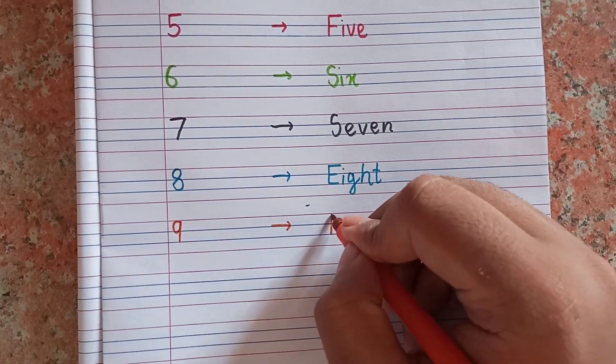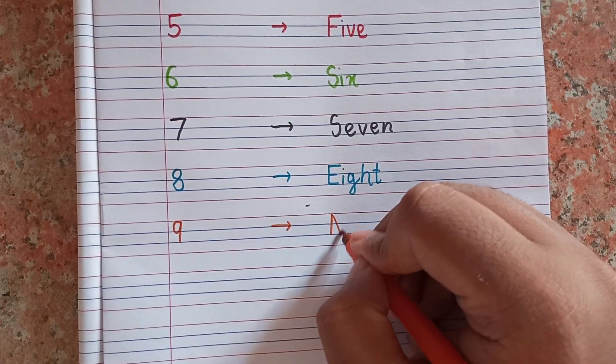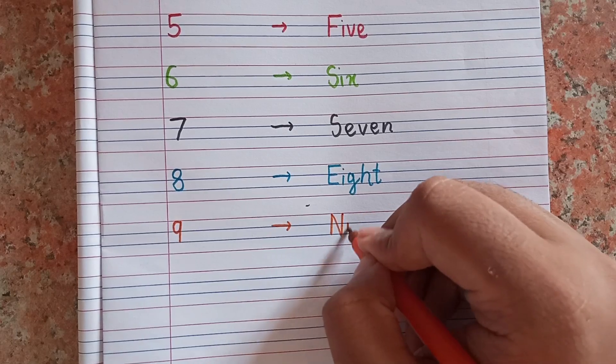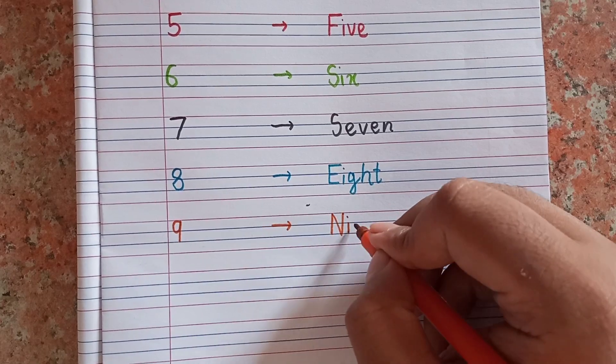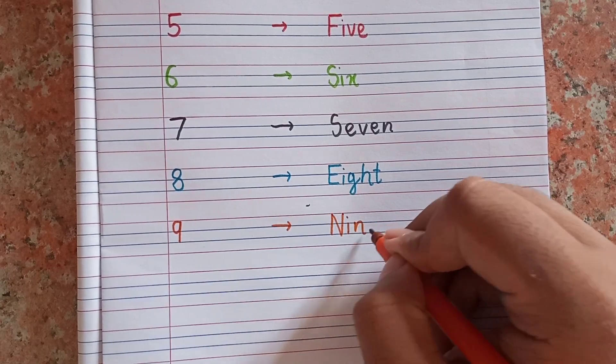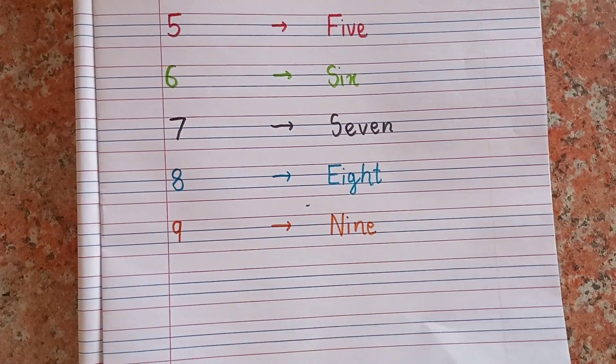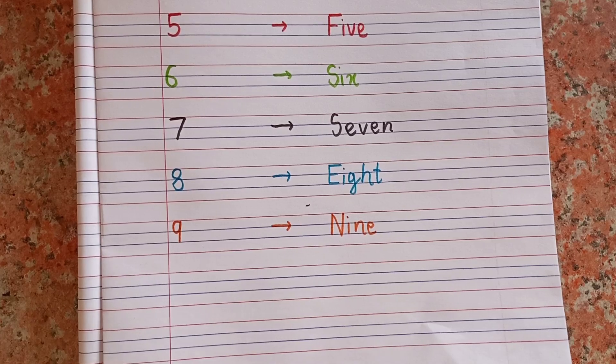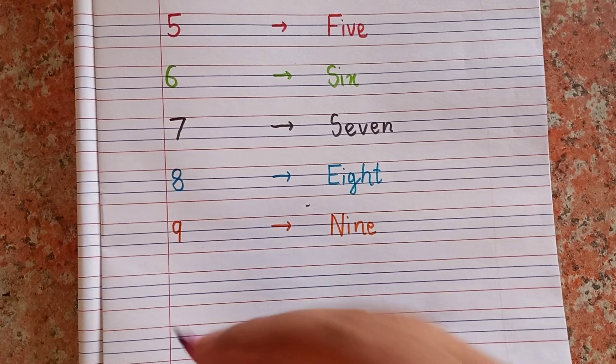After 8, next number will be 9. This is 9 and spelling of 9 is N-I-N-E. 9, N-I-N-E.